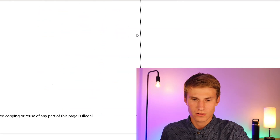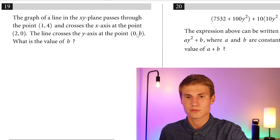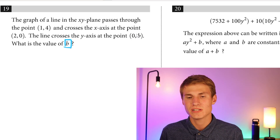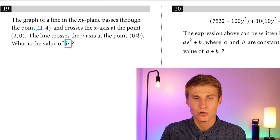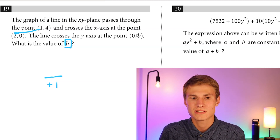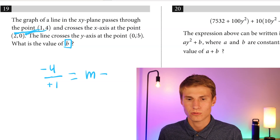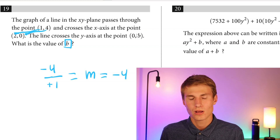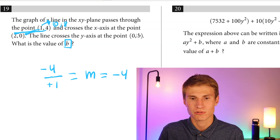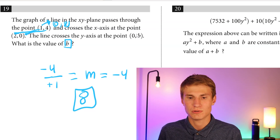Moving on to number nineteen: a line in the XY plane passes through (1, 4) and crosses the x-axis at (2, 0). The line crosses the y-axis at (0, b). What is the value of b? Going one unit to the right, we drop from 4 to 0 — a change of negative 4. So the slope is negative 4. Going one unit to the left from x=1, we go up by 4, from 4 to 8. So the y-intercept is 8, and b equals 8.